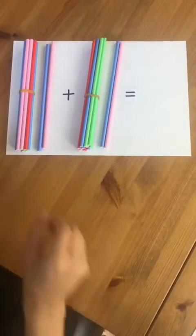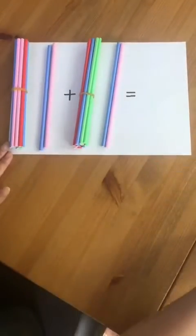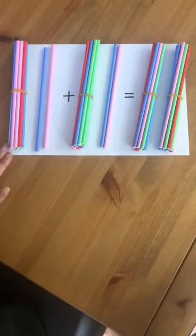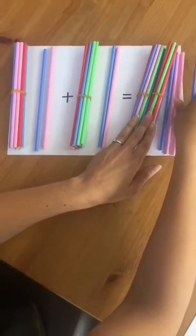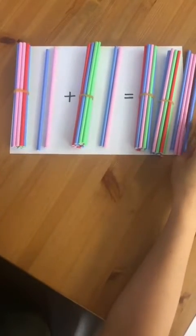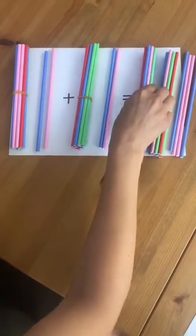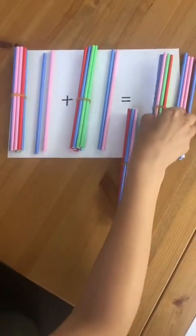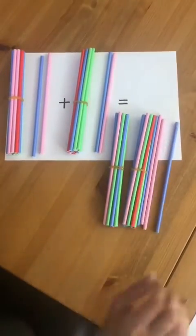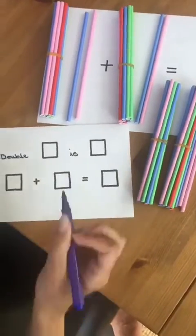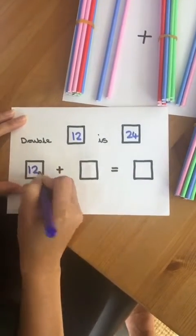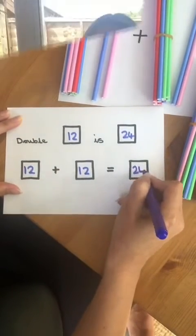To work it out, I've got two bundles of ten. Two bundles of ten and one, two, three, four single straws. To work out the answer, it will probably be easier to add the tens together first. Ten, twenty, twenty-one, twenty-two, twenty-three, twenty-four. I can say double twelve is twenty-four because twelve plus twelve equals twenty-four.